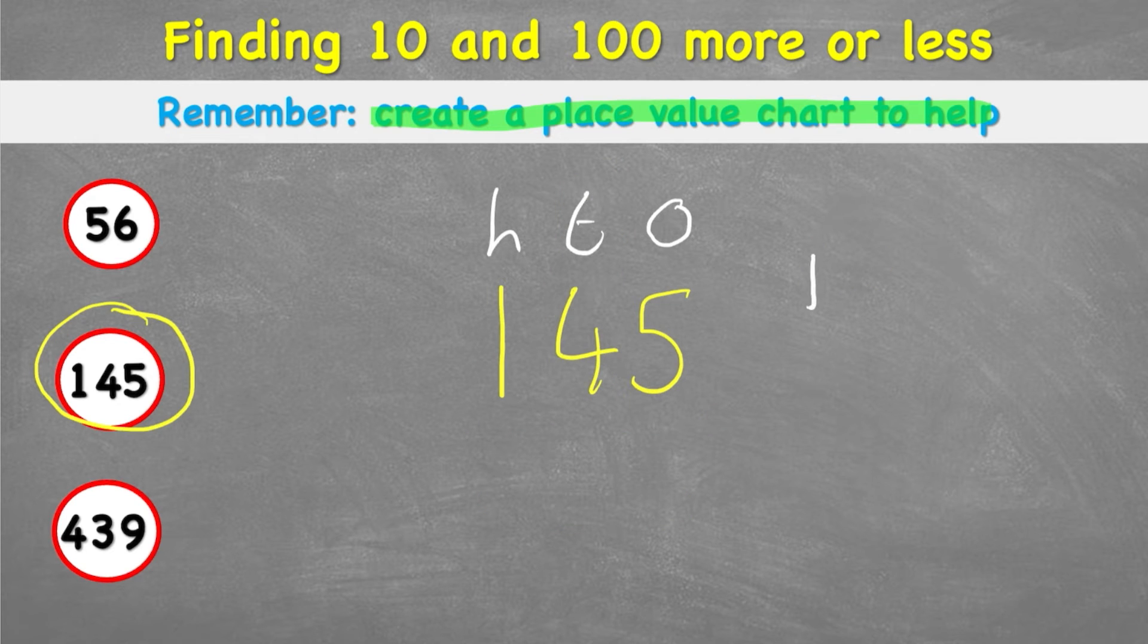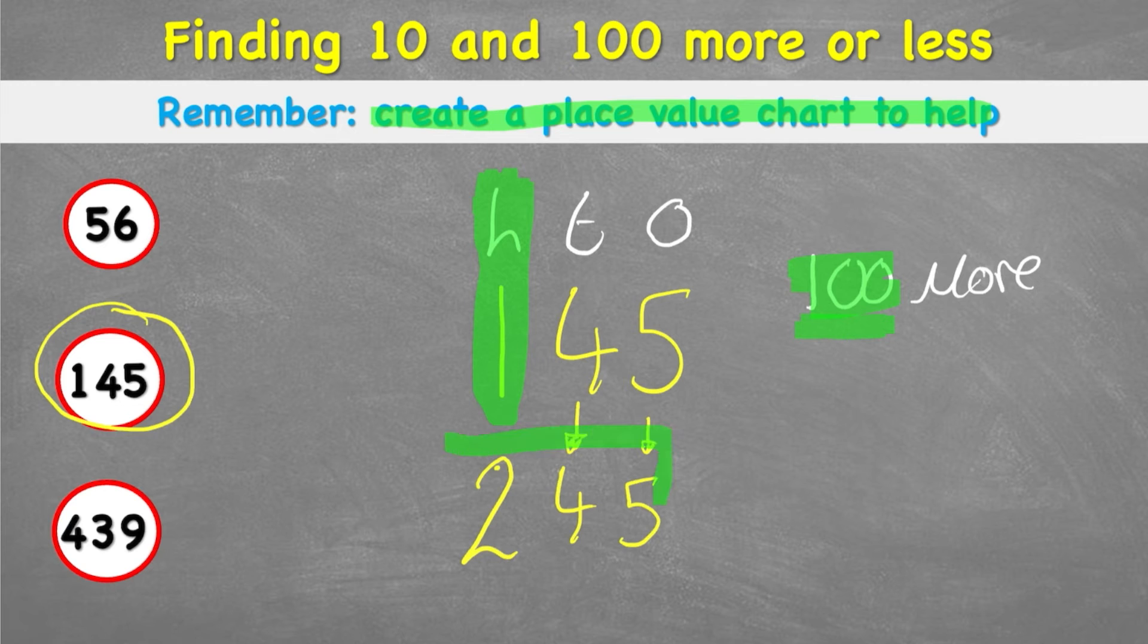But what about 100 more? Let's have a look what that looks like. Well, now we're looking for 100 more. Which column am I going to look at? Not my tens column anymore, because that's tens. I'm going to look at my hundreds column. So now, I can see I have a 1 in my hundreds column. And if I'm adding 100 more, I'm going to add 1 to my 1, which equals 2. I didn't do anything to my 4 in the tens column. And I didn't do anything to my 5 in the ones column. So my new answer to 100 more than 145 equals 245.